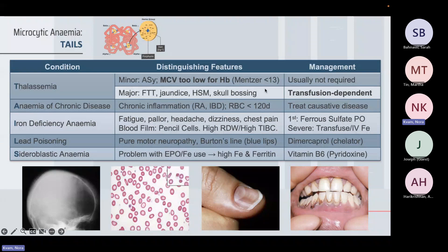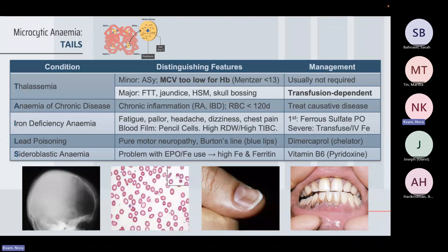Major thalassemias present very differently. Patients will have failure to thrive and be jaundiced because the defective red blood cells are broken down. They'll also have skull bossing because the body tries to compensate by producing even more red blood cells, causing the bone marrow to work very hard and making the bones appear thicker — including the skull. The treatment for major thalassemia is blood transfusion.